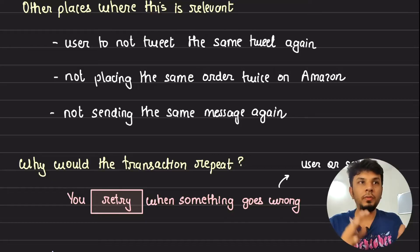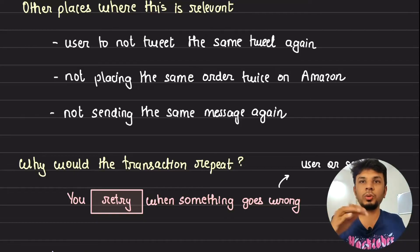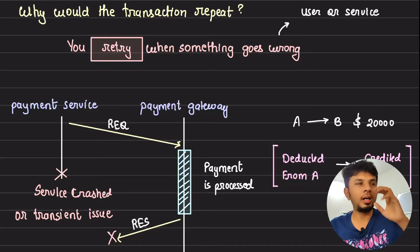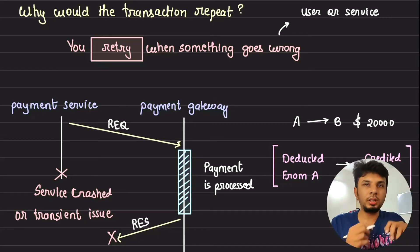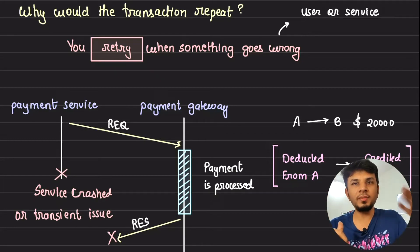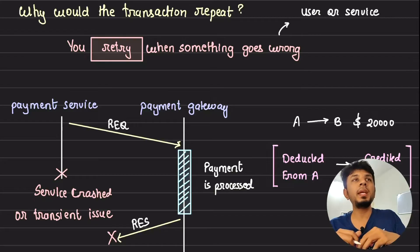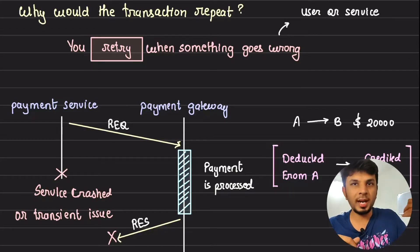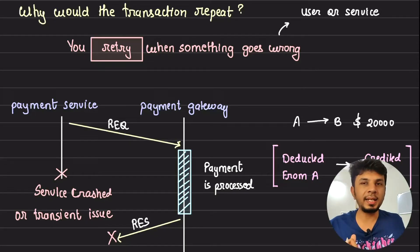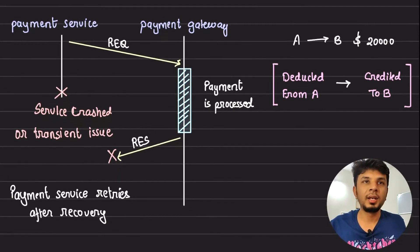We need to guarantee idempotency while handling API calls, but first let's understand why a transaction would repeat. This typically happens when we retry — if there is no reason to retry, the transaction would happen just once. Retry could be because of a double-click by the user, or because of an API failure. Let me take an example of an API failure which is much more prevalent.